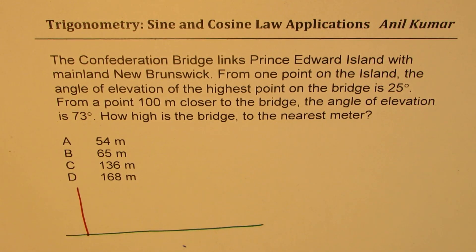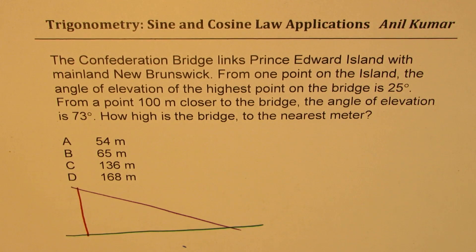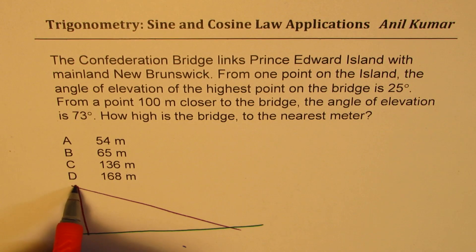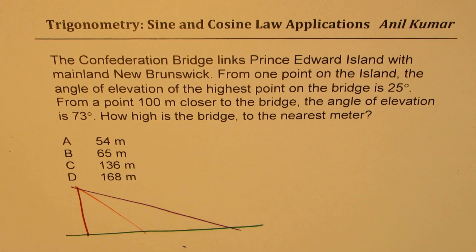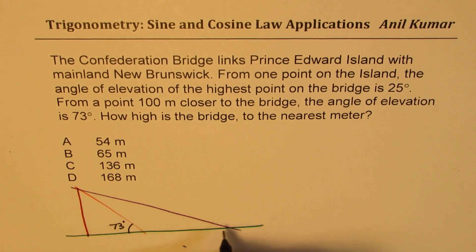We're making measurements from the right side. One of the angles is like this, because the other angle is from a point which is 100 meters closer. So obviously the bigger angle is this one — I'll write 73 degrees here, and the smaller is 25.